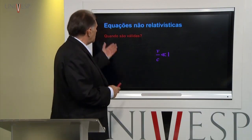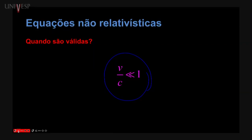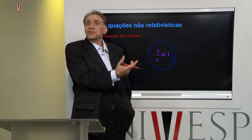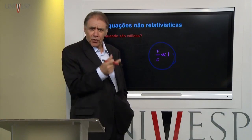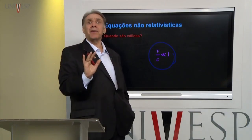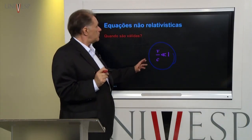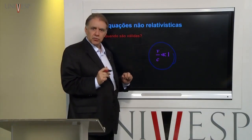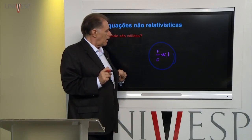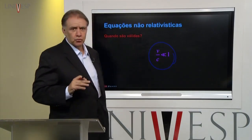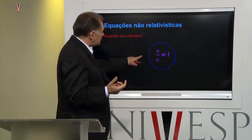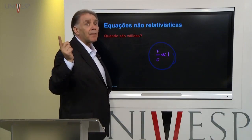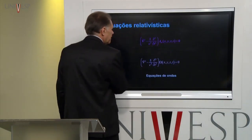Por que ela é útil e quando ela é válida? Se a velocidade do elétron for muito menor do que a velocidade da luz, como é o caso dos átomos. Os elétrons não se movem muito rápido nos átomos, o que facilita a discussão. Então, se v for muito menor do que c, você pode usar a equação de Schrödinger. Ela é muito útil para toda a química e para entender os átomos. O elétron não se move tão rápido, e isso facilita tudo.